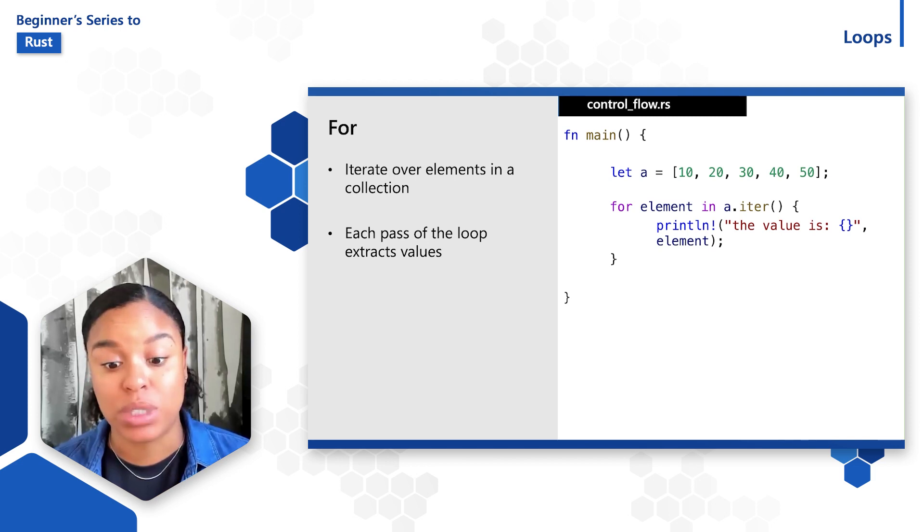Once the end of the array is reached, the code will continue on executing. The same thing can be achieved with a while loop, but a for loop is much more concise. In addition, it eliminates the chance of bugs or errors from possibly going beyond the range of the elements in the array. For these reasons, for loops tend to be the most commonly used over while loops.